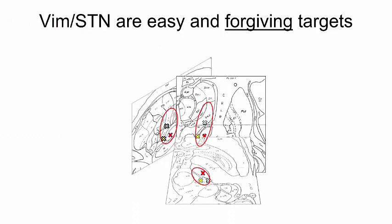It is also important to realize that the VIM and the STN are easy and forgiving targets. The VIM is easy, since it cannot be visualized, and we have to rely on atlas coordinates. The STN is easy, since it is so easy to visualize. They are further forgiving, at least in patients with tremor. If you target a patient with essential tremor in the VIM, but end up in the STN, you will probably have a happy patient.